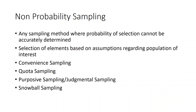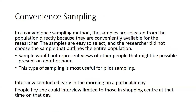In non-probability sampling, the probability of selection cannot be accurately determined. The selection of elements is based on assumptions regarding the population of interest. The types of non-probability sampling are: convenience sampling, quota sampling, purposive sampling, and snowball sampling. Convenience sampling means samples are selected based on what is conveniently available for the researcher — for example, sharing a questionnaire with people in the nearby area.